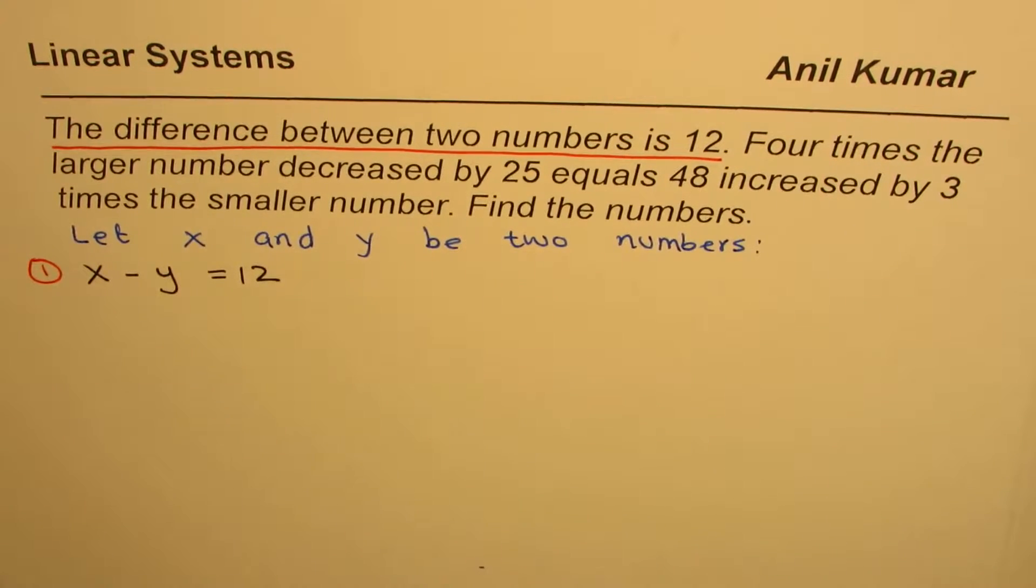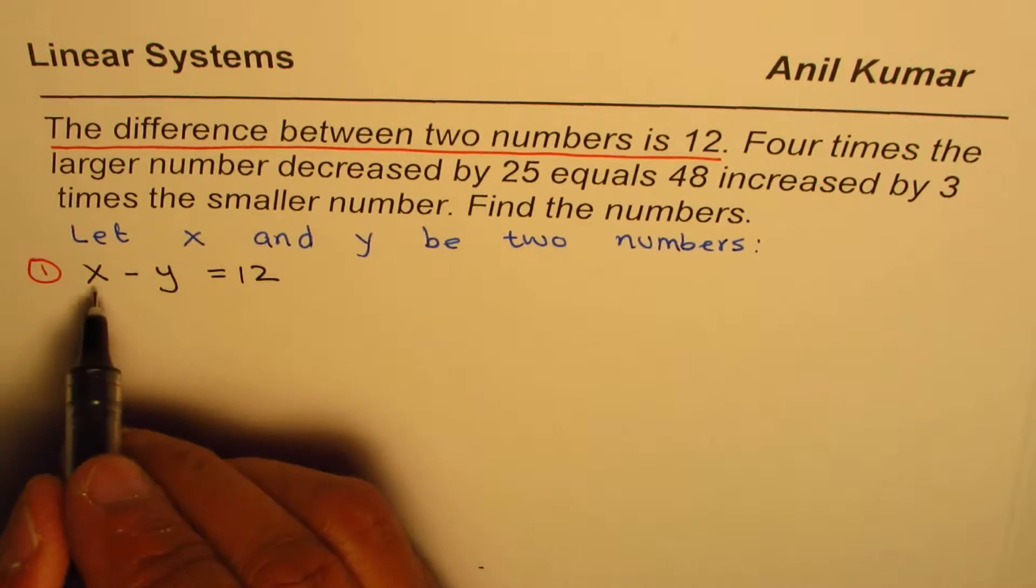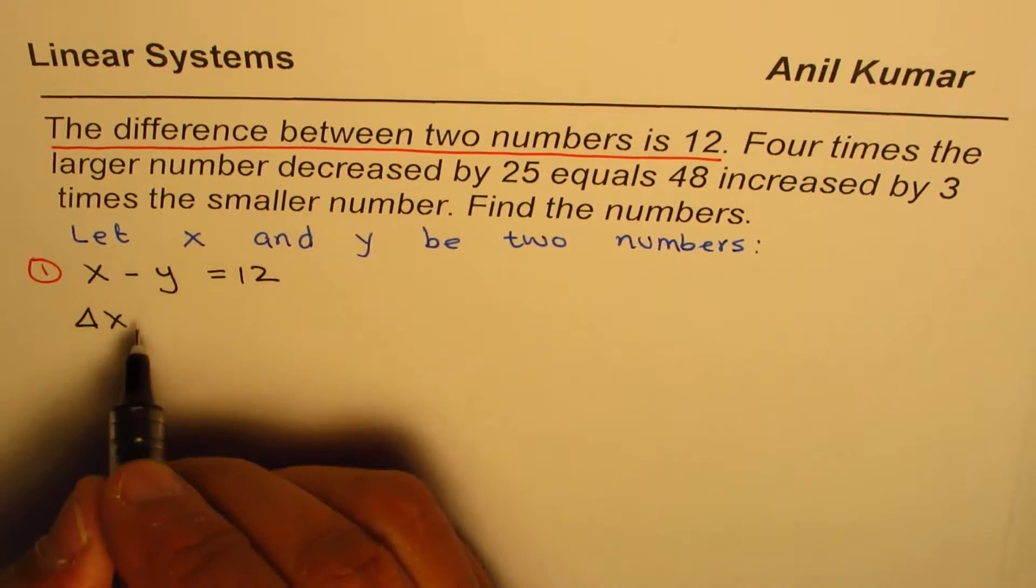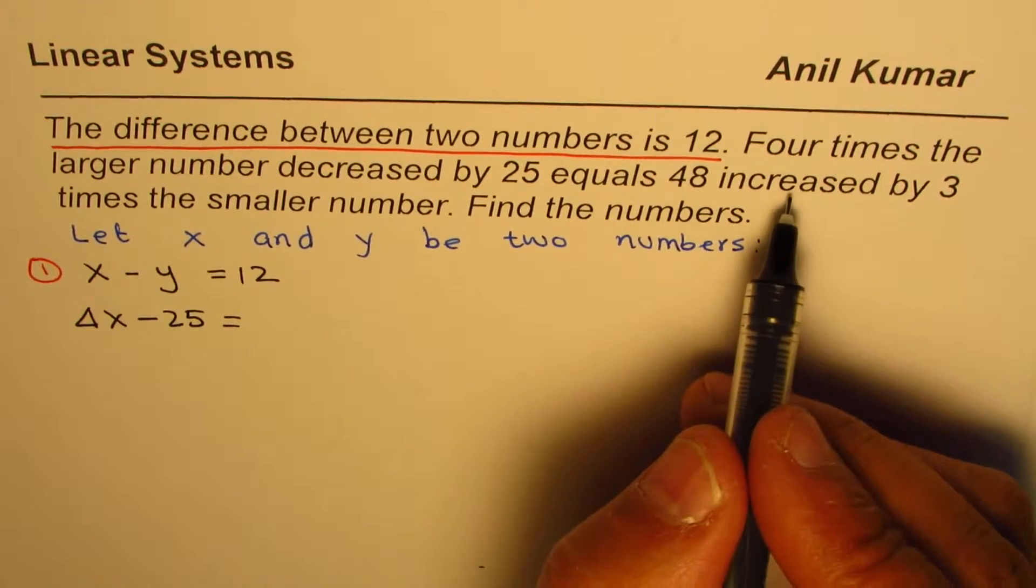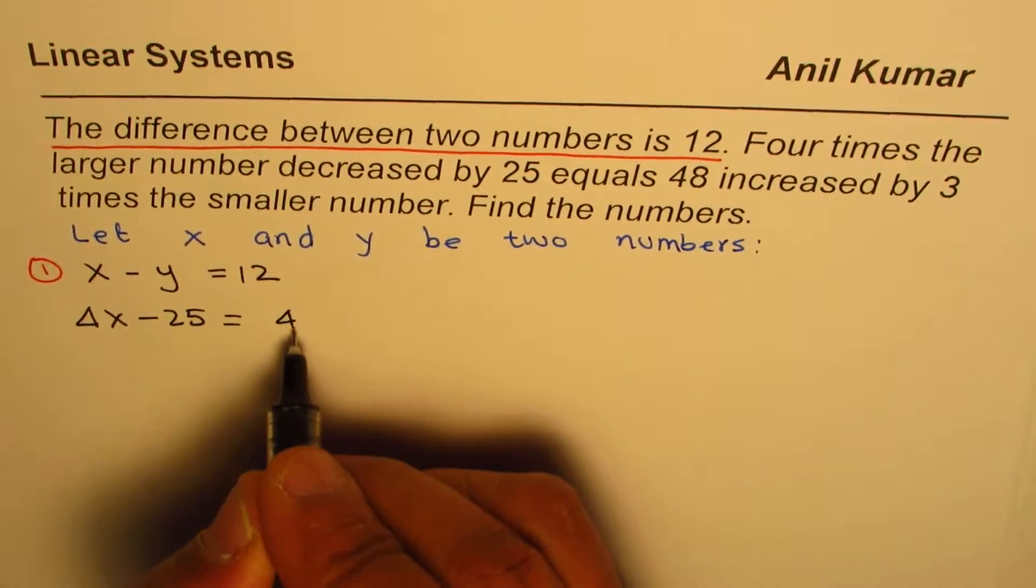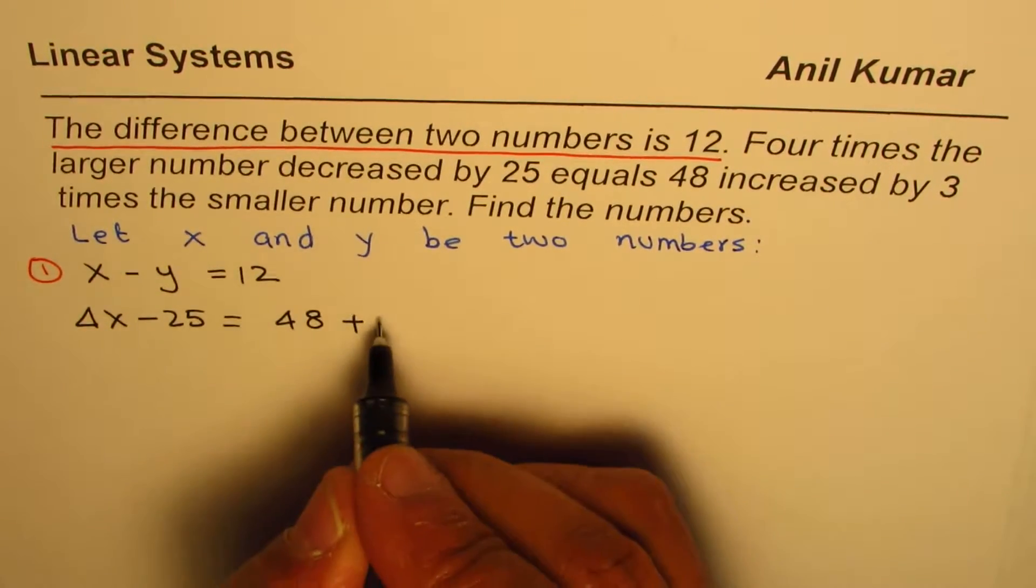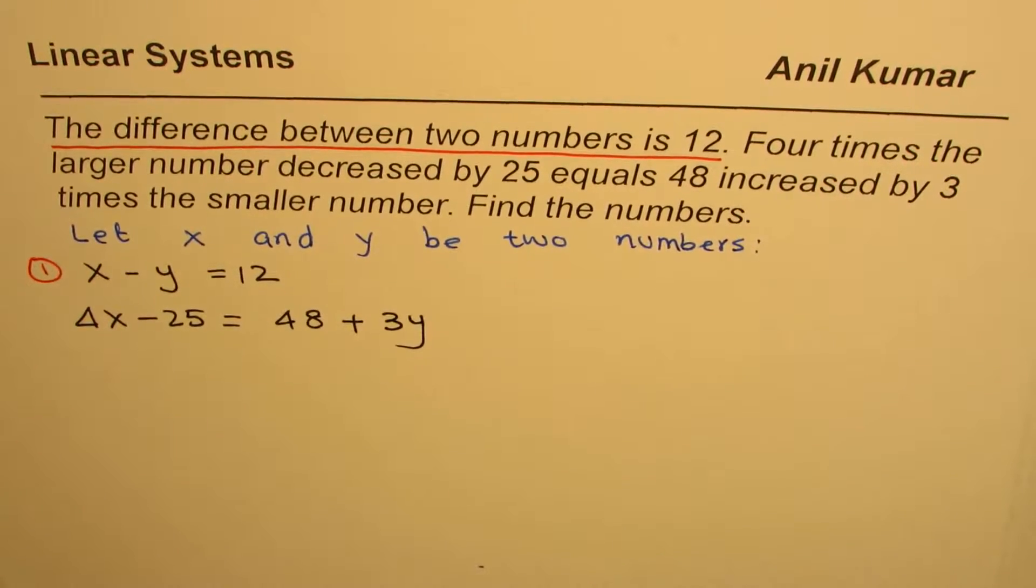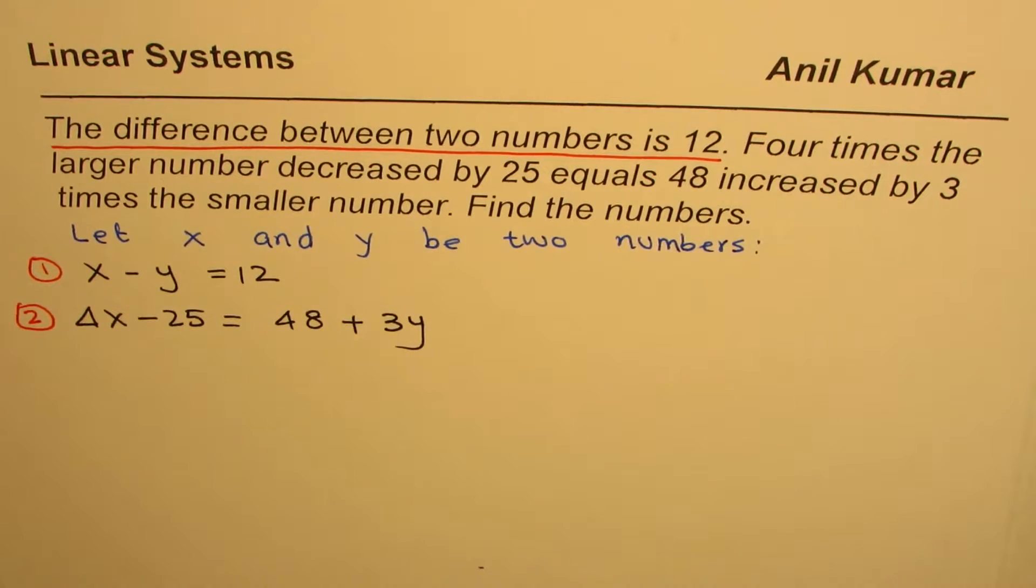Now let's read the next statement. Four times the larger number, which is X, decreased by 25, minus 25, equals 48 increased by, plus, three times the smaller number, which is Y. Just reading and translating we get our second equation. We have two equations with two variables X and Y.